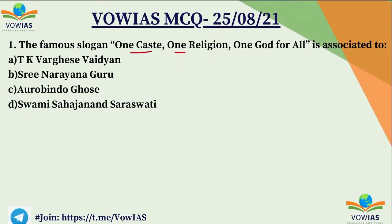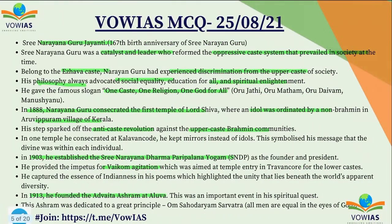The famous slogan 'One caste, one religion, one God for all' is associated with whom? The correct answer is B, Sri Narayan Guru. Sri Narayan Guru Jayanti was recently celebrated — his 167th birth anniversary. Sri Narayan Guru was a catalyst and a leader who reformed the oppressive caste system prevailing in society. He belonged to the Ezra community and had experienced discrimination from the upper caste in all forms. So he gave this famous slogan: one caste, one religion and one God for all.